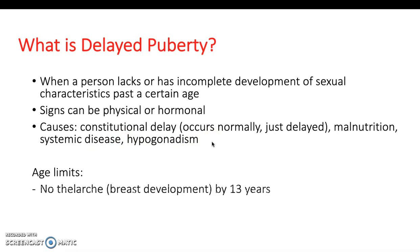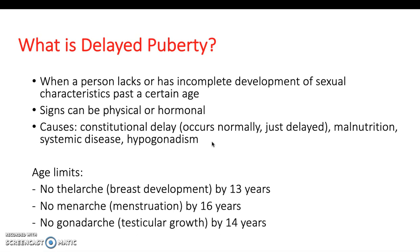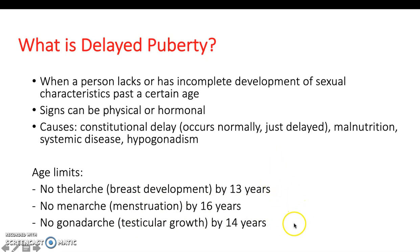These are the age limits, which are quite broad. By 13 years you'd expect breast development, menstruation by 16, and testicular growth by 14. If none of these have occurred by those ages, you would be thinking about delayed puberty and investigating what's going on underneath.